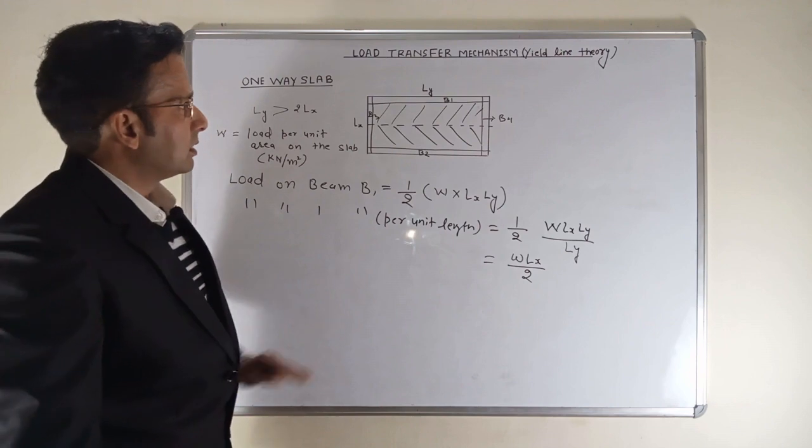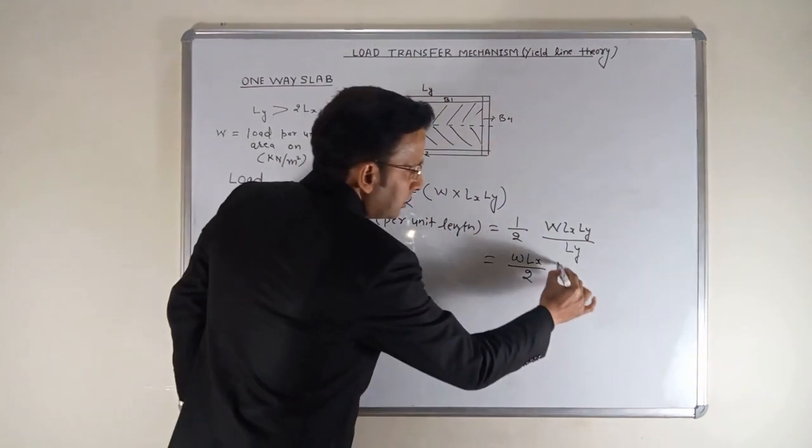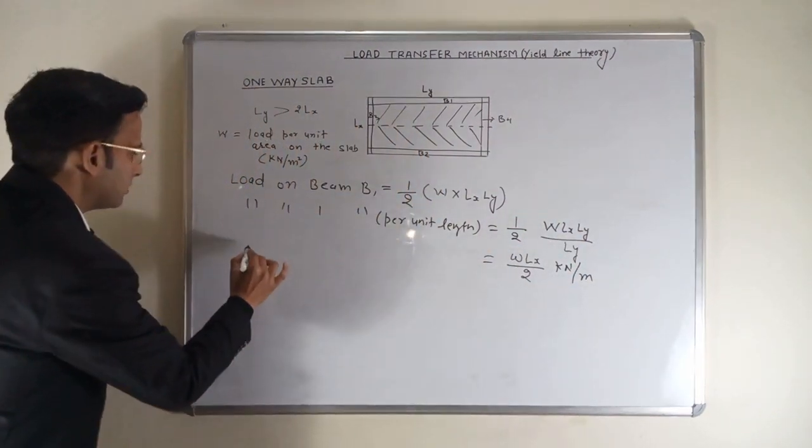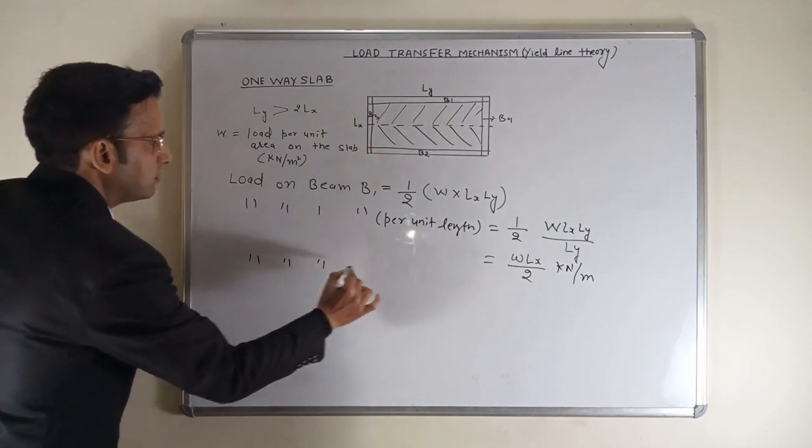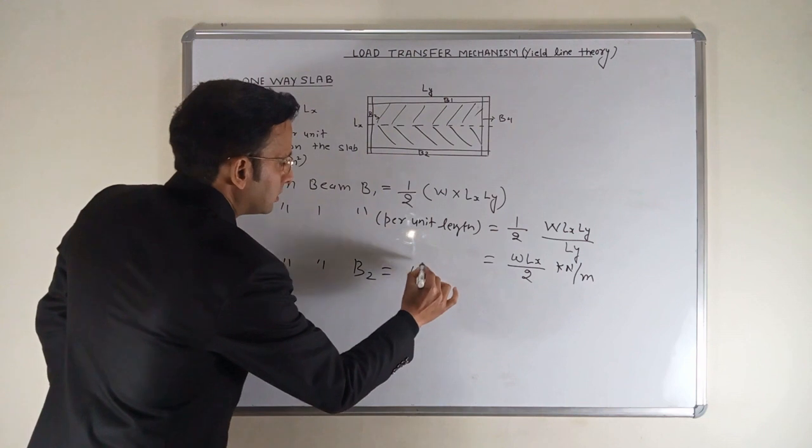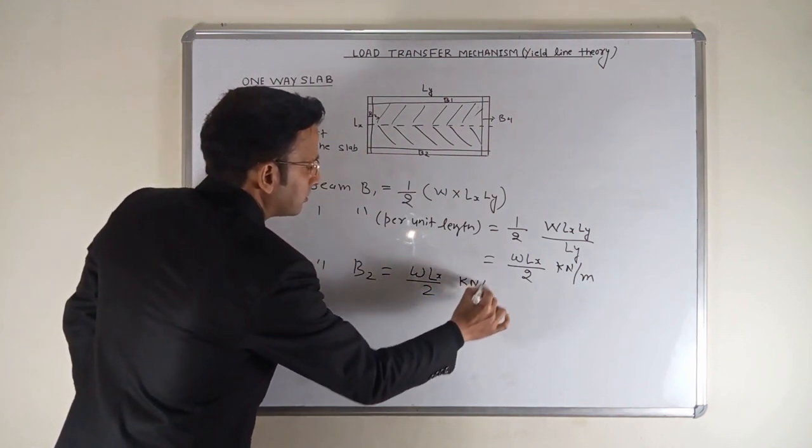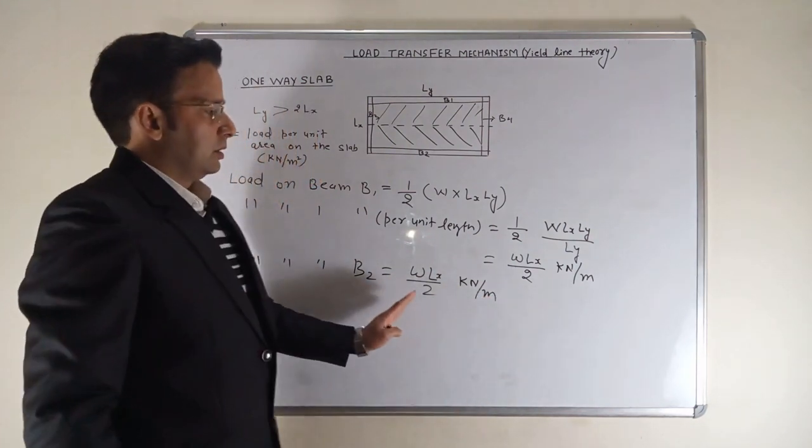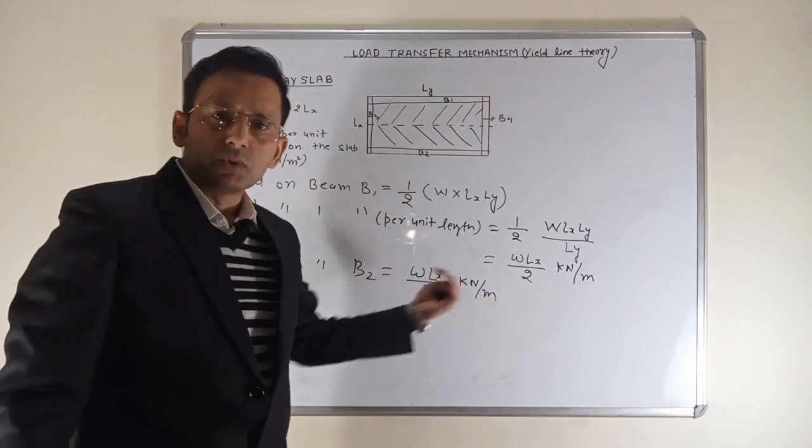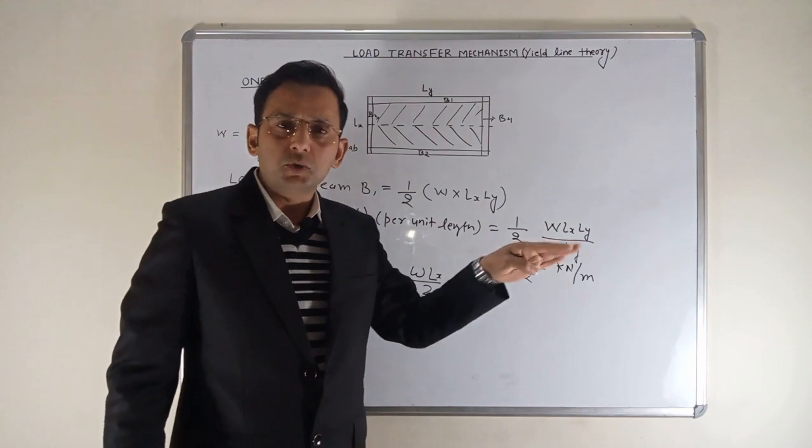I think it might be clear to all of you. So the load on this portion, on beam B1, will be W Lx by 2 kilonewton per meter. And in the same way, load on beam B2 is also W Lx upon 2 kilonewton per meter.